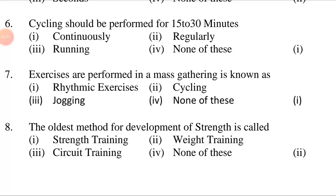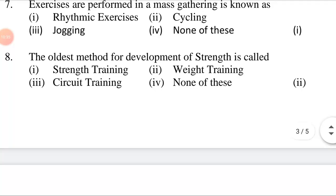Exercises performed in mass gathering are known as dash. First option: rhythmic exercises. Second option: cycling. Third option: jogging. Fourth option: none of these. The answer is first option — rhythmic exercises. Exercises performed in mass gathering are known as rhythmic exercises. The oldest method for development of strength is called dash. First option: strength training. Second option: weight training. Third option: circuit training. Fourth option: none of these. The answer is second option — weight training. The oldest method for development of strength is called weight training.